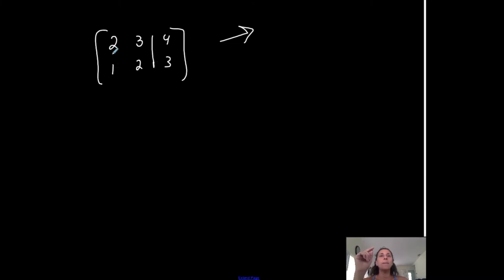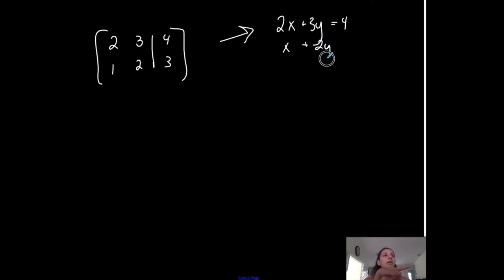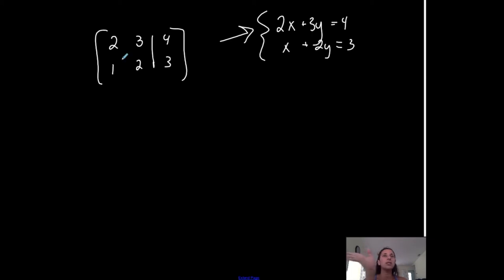It's a two by three matrix. It looks like it had only two variables, so let's call it x and y. I'm going to convert it back into equation form, a system of equations. So I have 2x plus 3y equals 4 going across the top. And then 1x plus 2y equals 3. So this is the system that it came from. I'm not necessarily going to solve the system right now using matrices — I just want to show you different operations that I can do to this, and also show you how to go from a matrix to a system.